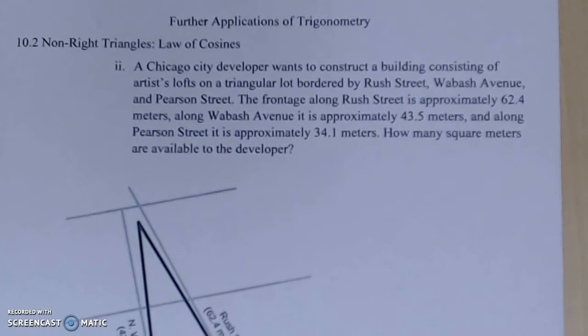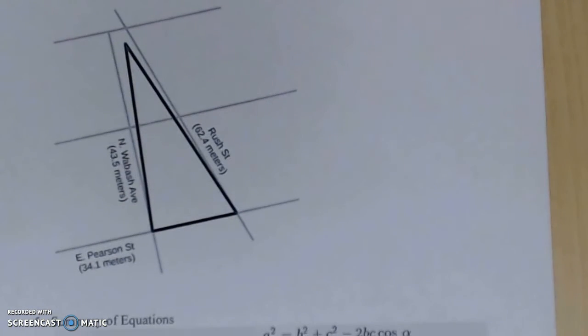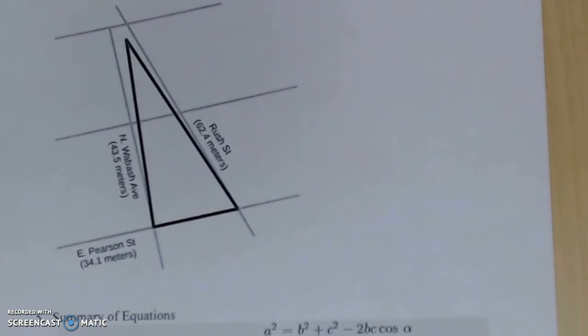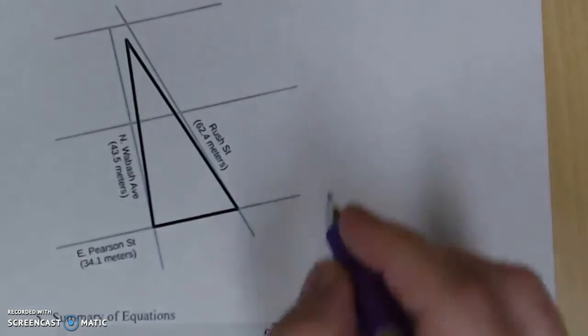How many square meters are available to the developer? You can see they've included this figure here. At the end of the day, this is just a triangle with three given sides, and they want to know the square meters available, which is area.